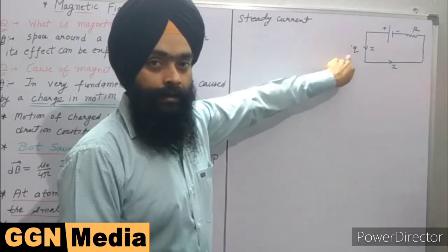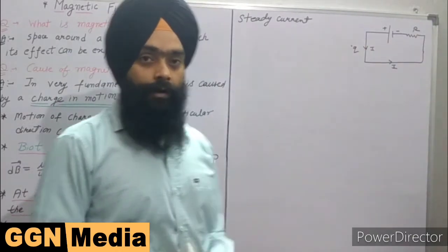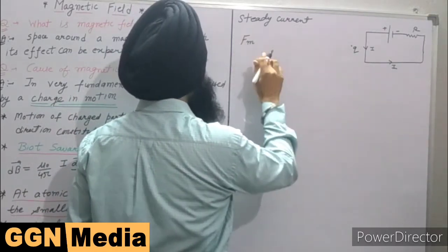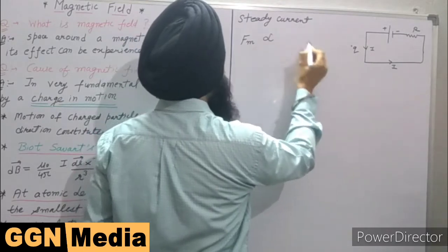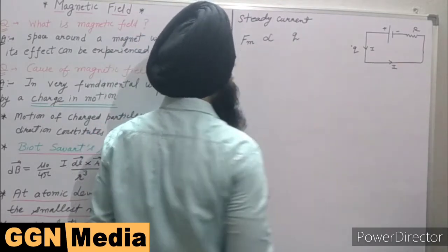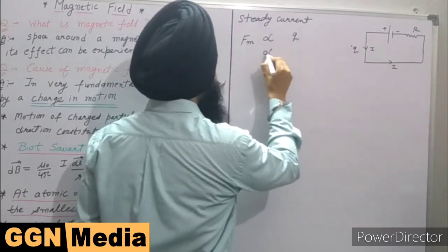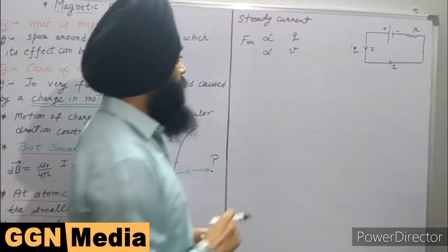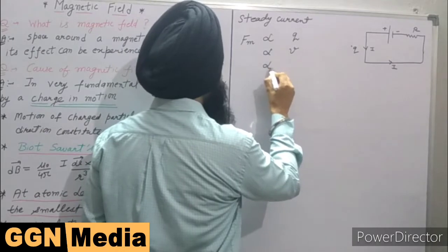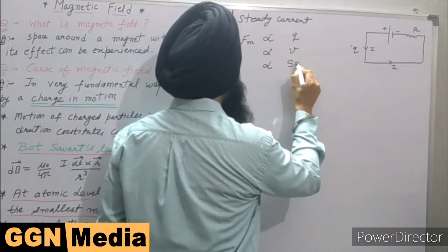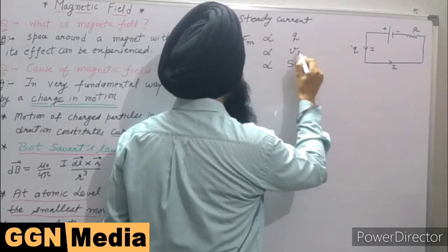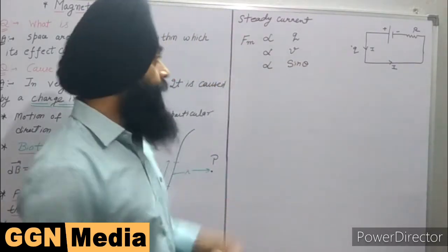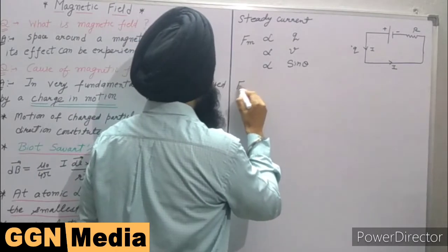Let us see if charge is moving with velocity v, what type of forces are acting on it. First of all, the force which is experienced by this charge is directly proportional to magnitude of the charge, then it is directly proportional to the velocity of the charge, and thirdly it is directly proportional to the sine of angle theta between direction of velocity and direction of magnetic field.